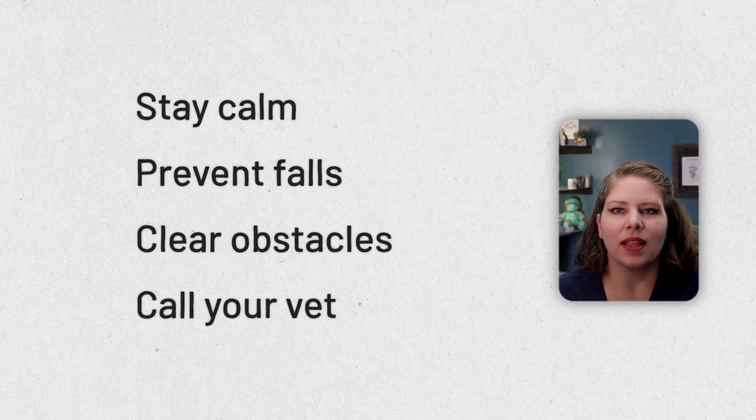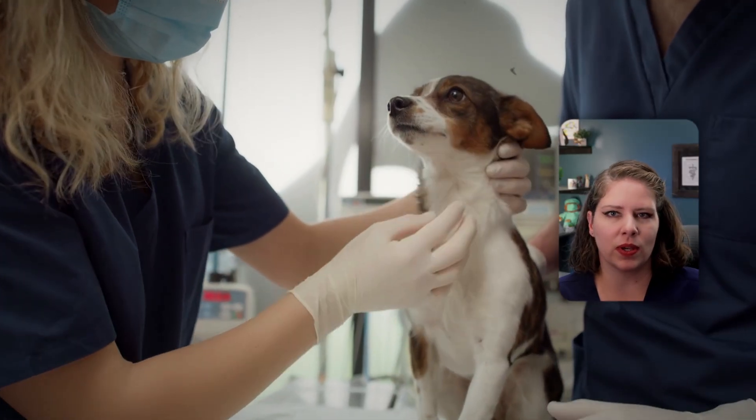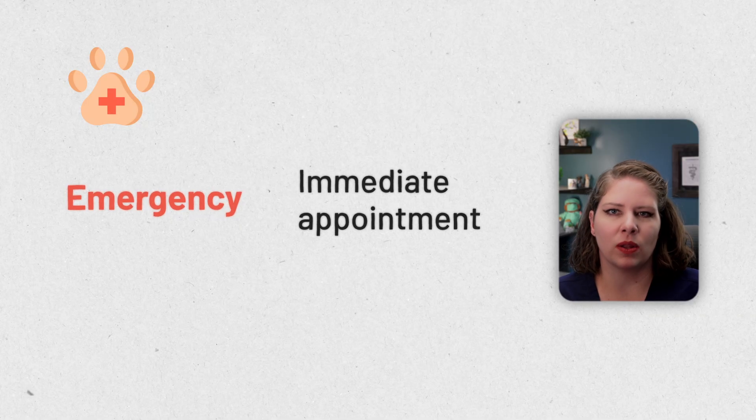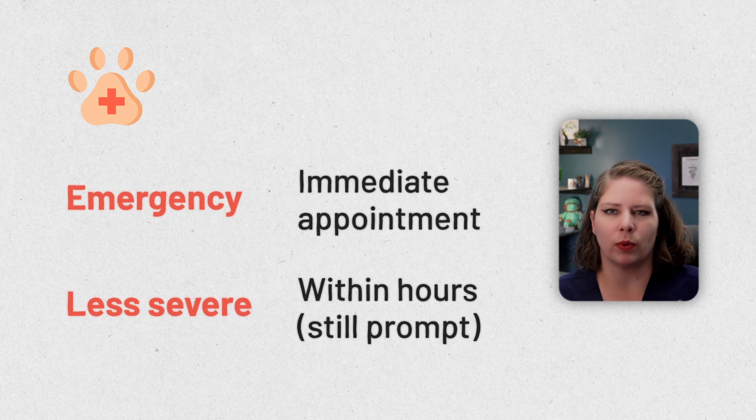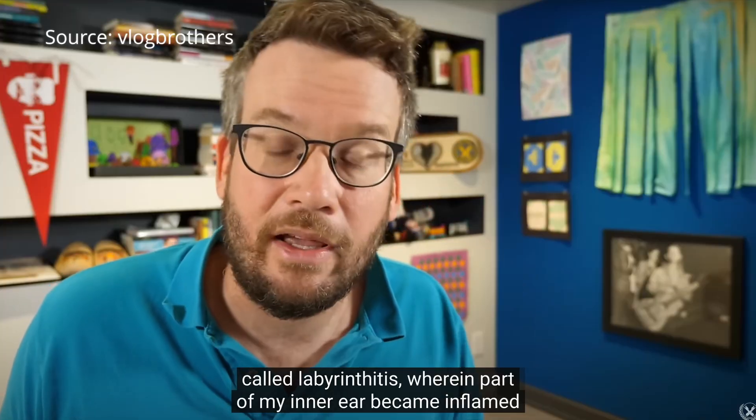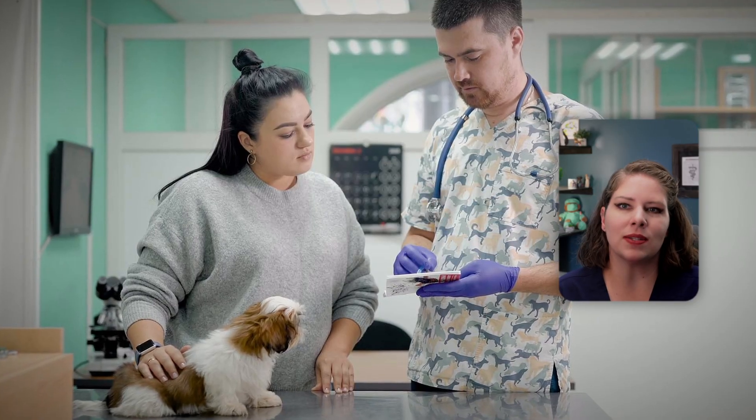Then you need to call your vet clinic and let them know what you're seeing. You will need to get an exam done pretty promptly. Depending on the exact symptoms and your pet's medical history, that may mean an immediate emergency appointment, or depending on how busy your vet clinic is, it may be seen within the next eight hours or so. It does need to be done promptly — either immediately or within a number of hours — because at the very least your animal needs medication to help them cope with these symptoms. Otherwise the symptoms are absolutely miserable. If you talk to anybody who's had vestibular symptoms, like John Green who has publicly talked about middle ear problems, it's distressing and miserable to deal with, and having medication to reduce symptoms and nausea is incredibly important.